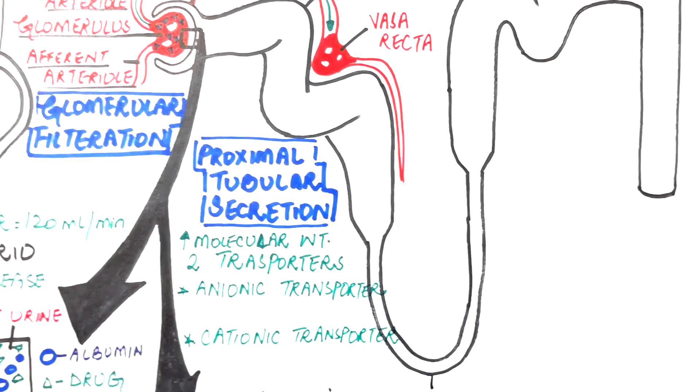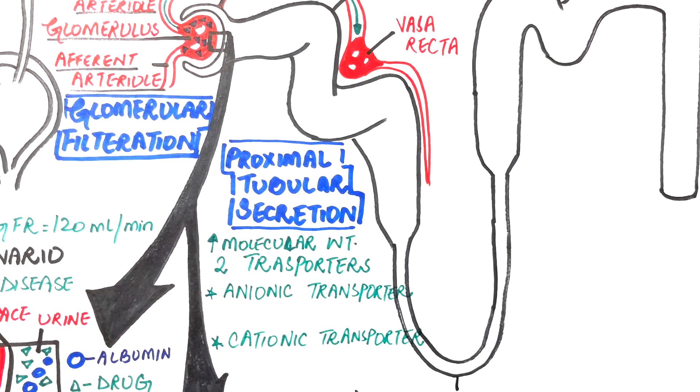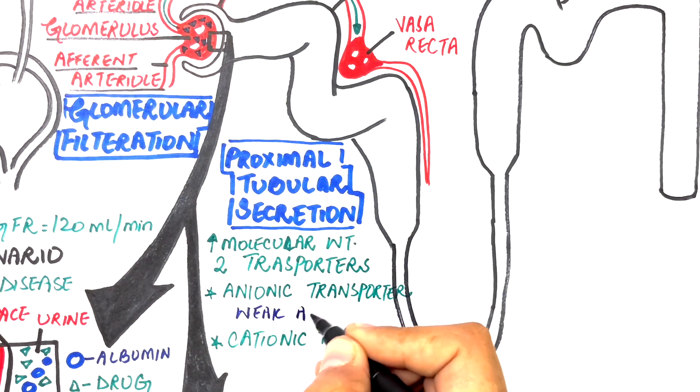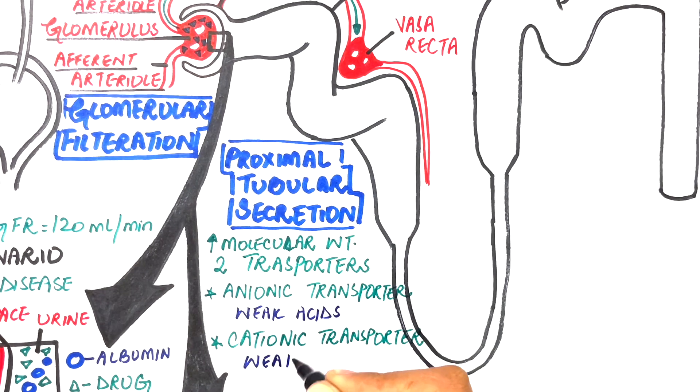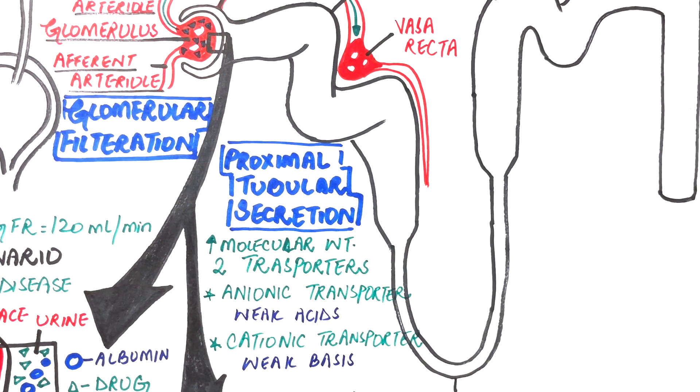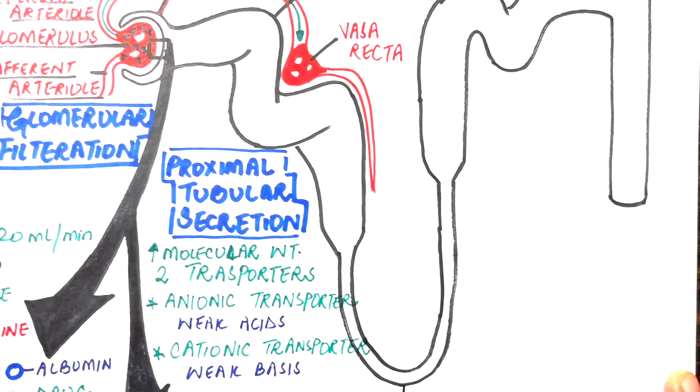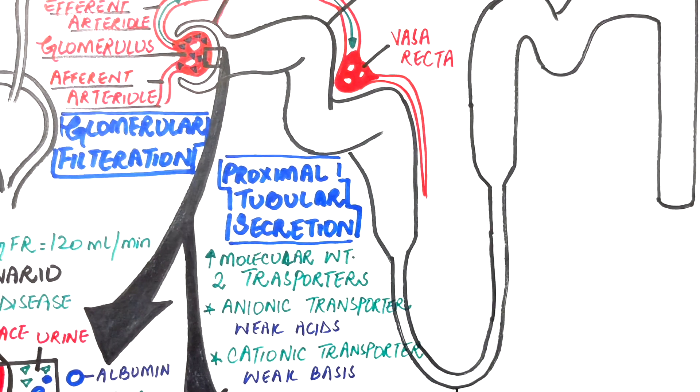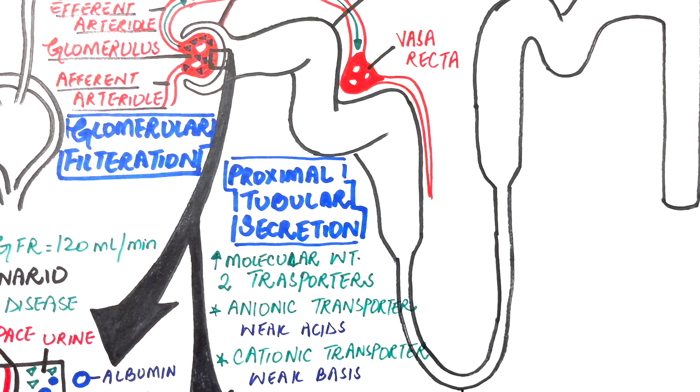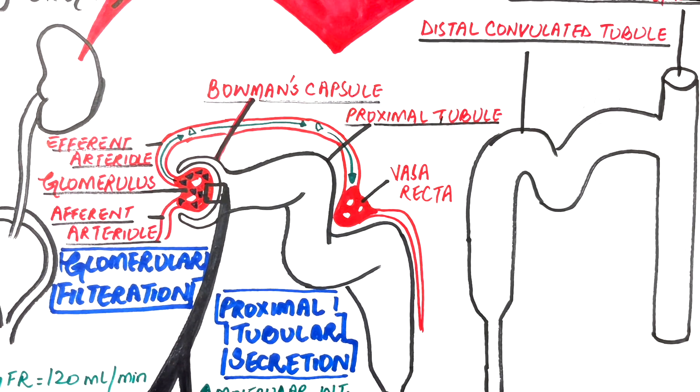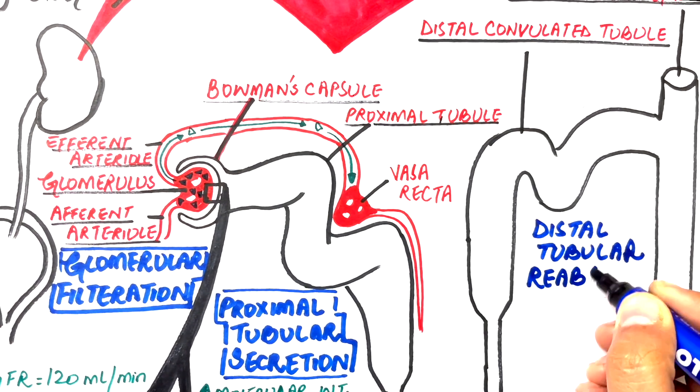The organic anionic transporter actively secretes the deprotonated forms of weak acids, while the organic cationic transporter is meant for active secretion of protonated forms of weak bases. Each of the transporters has low specificity, which means that in the presence of multiple drugs, these transporters can be saturated, inhibited, or may be blocked.